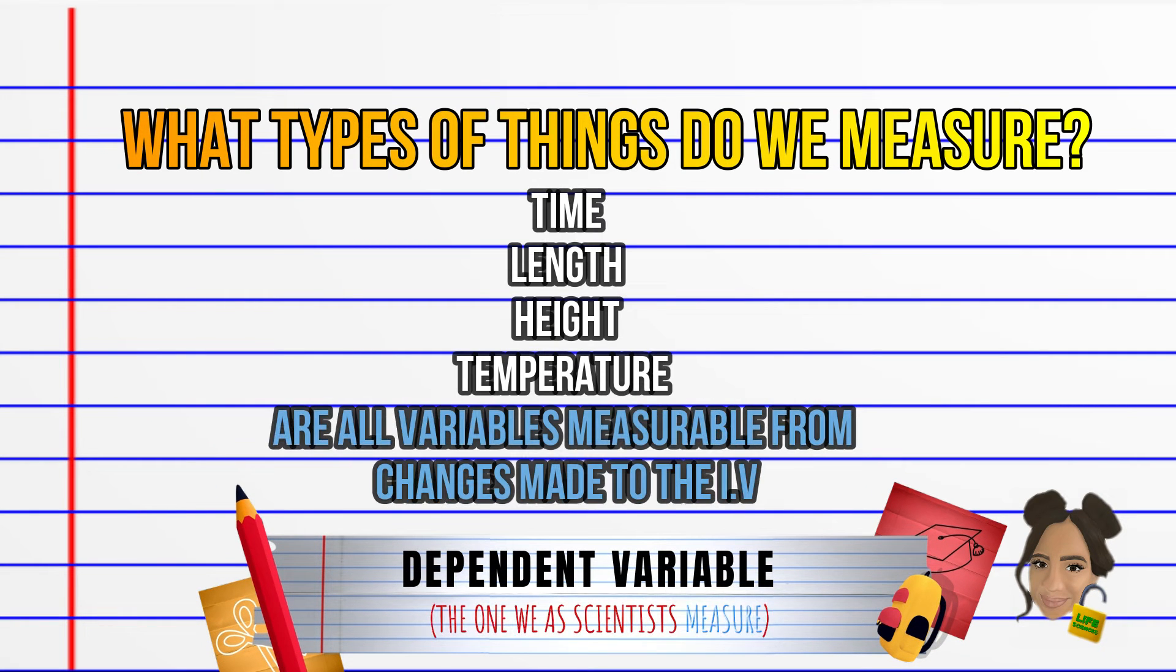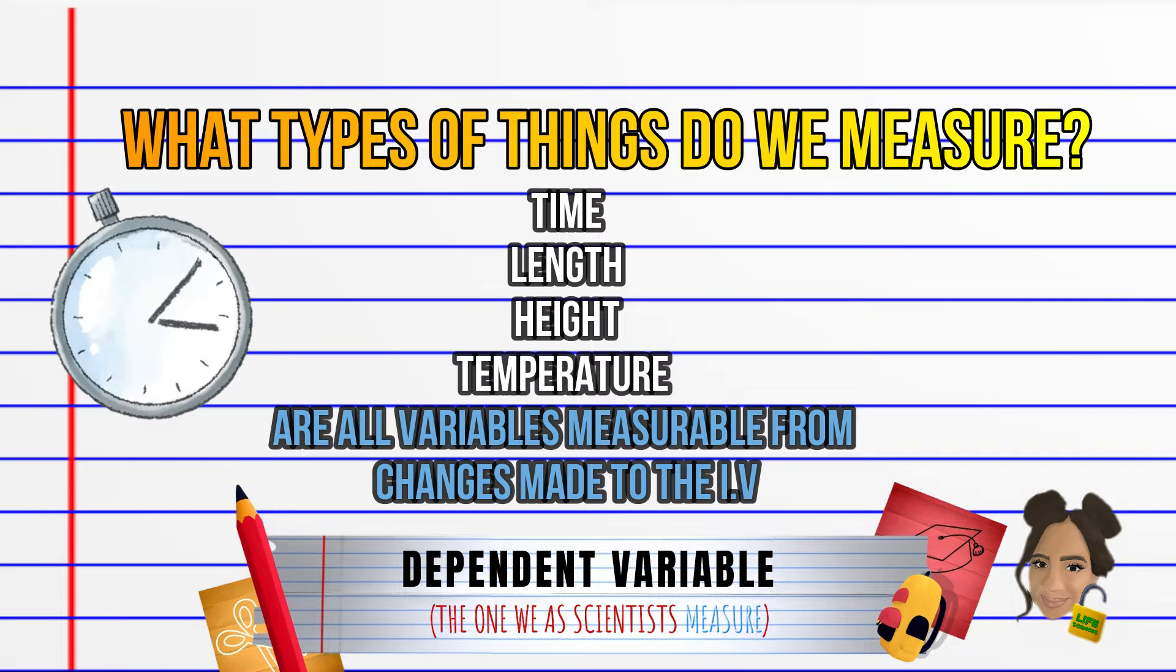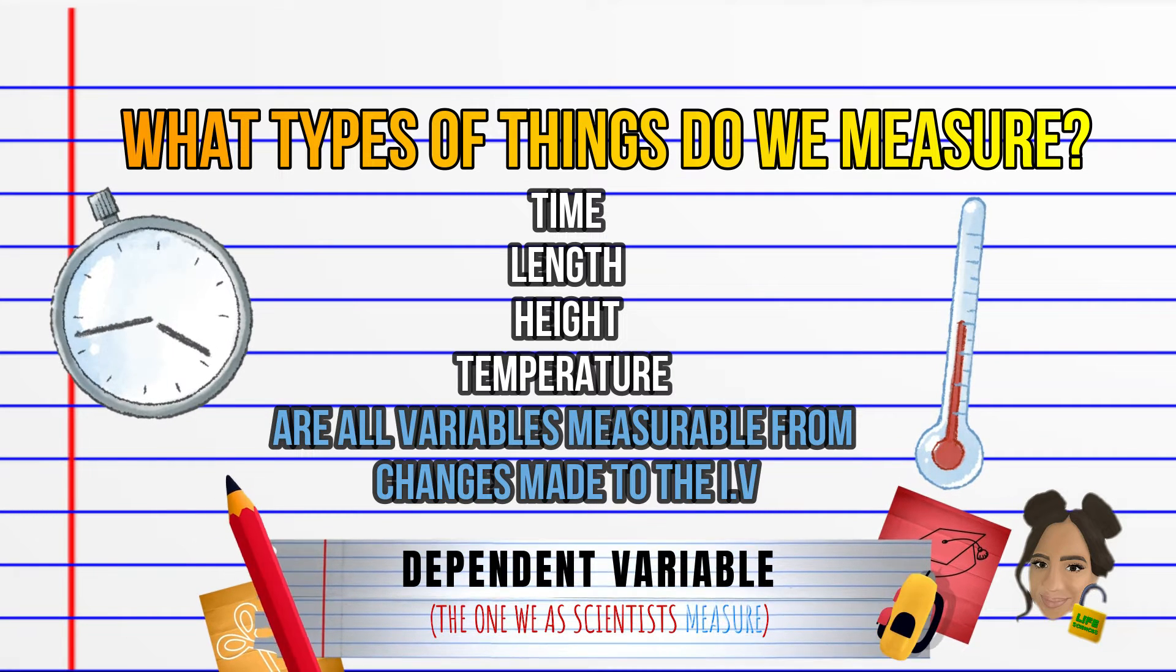The dependent variable is one which we as scientists measure. All dependent variables are measurable from changes made to the independent variable.